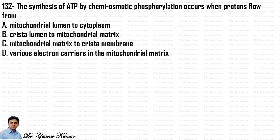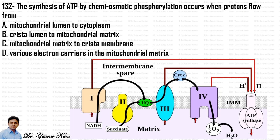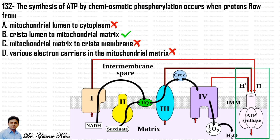Next question: the synthesis of ATP by chemiosmotic phosphorylation occurs when protons flow from where? Looking at the figure, protons flow from the intermembrane space (cristae lumen) to the matrix of the mitochondria through ATP synthase. Hence option B — cristae lumen to mitochondrial matrix — is correct.